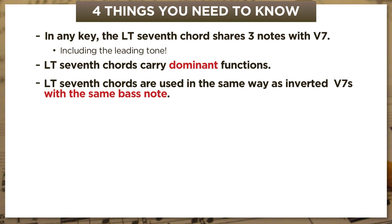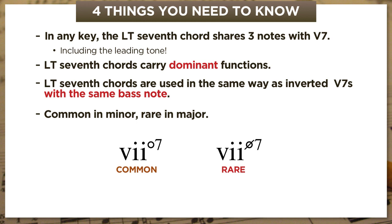But there's a catch, though. Unlike pretty much every functional chord we've studied so far, leading tone 7th chords don't play the same role in major and minor keys. The difference is this. Leading tone 7ths are extremely common in minor keys, but they're extremely rare in major ones. In other words, we're going to see 7 diminished 7 all the time in minor, but we're almost never going to see its cousin 7 half diminished in major. So most of this video is going to focus on 7 diminished 7 in minor, but at the very end, I'll give you an example of 7 half diminished 7 in major.